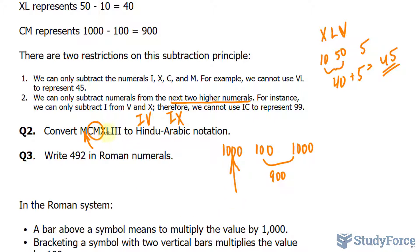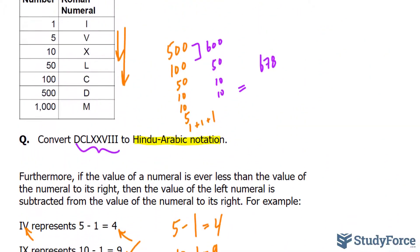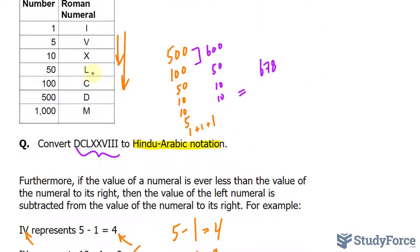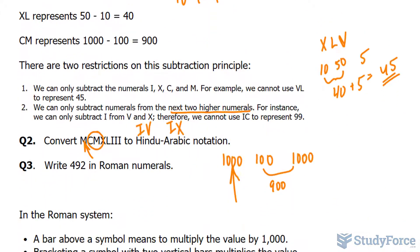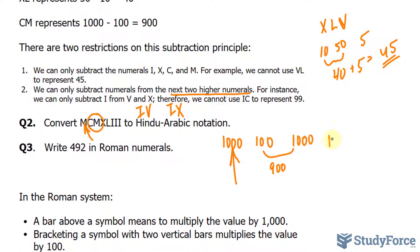Then we have XL. X and then L. Those can be subtracted. X is 10 and L is 50. So these two, subtracting them makes 40. Then we have these three I's. Adding up 1,000 plus 900 plus 40 plus 3 is 1,943.